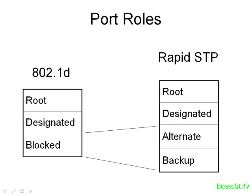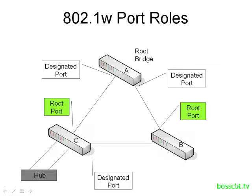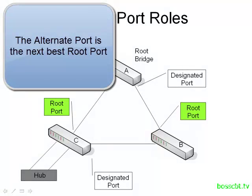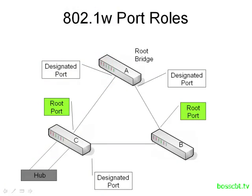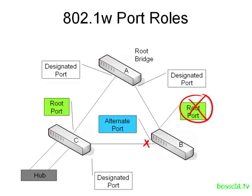Let's put this in a diagram to make it clear. The alternate port is the next best root port — an alternate to the root port — and it will be used if the active port fails. This is similar to the uplink fast feature where we identify the next best port in case we need it; that functionality has been baked into Rapid Spanning Tree. Here, switch C and B are connected, and the designated port is on switch C. Switch B puts that into a blocking state, with the port role now known as the alternate port. Should the root port on switch B fail, it will use the alternate port as its new root port.